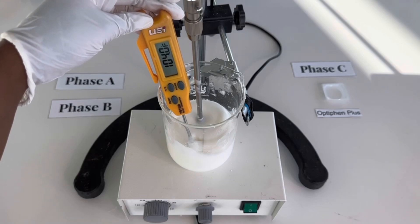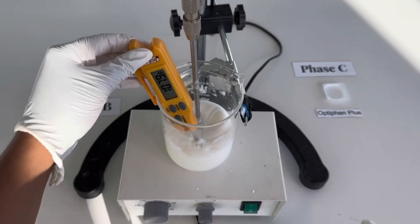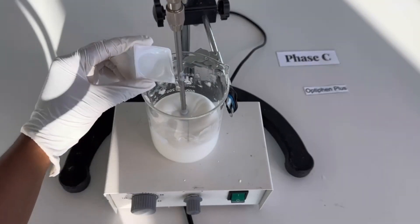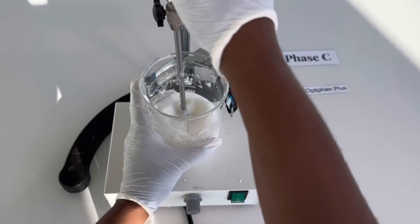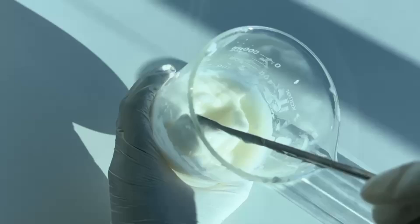At this time is when I like to add my preservative, which is Phase C. So now we're going to add Optiphen Plus to preserve our conditioner. I mix in Optiphen Plus a little bit with my overhead stirrer, and then I just manually stir it into the conditioner.